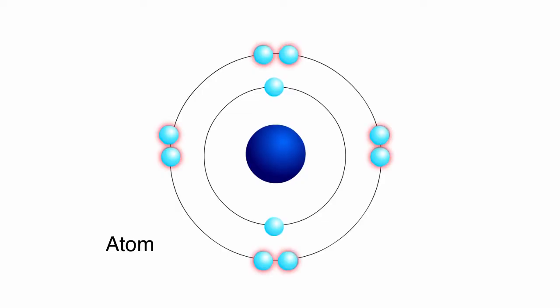Atoms that have an outer shell containing eight electrons are considered chemically stable. We often say they fulfill what is called the octet rule.